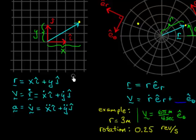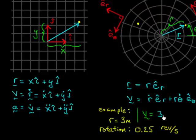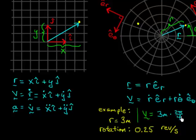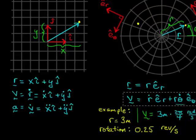Now let me write this in terms of r and theta-dot. I'll write this as r times theta-dot. With r equal to 3 meters and theta-dot equal to a quarter revolution per second — which is 2π divided by 4 radians per second — we get 3 times 2π/4, which is exactly 6π/4 meters per second. So the velocity expression is: velocity equals r-dot in the e-hat-r direction, plus r times theta-dot in the e-hat-theta direction.